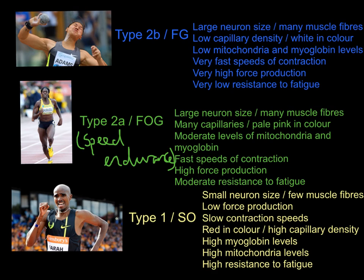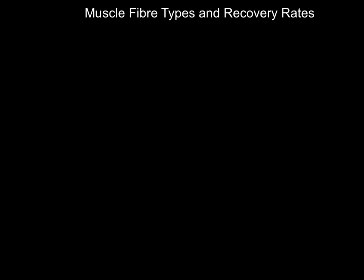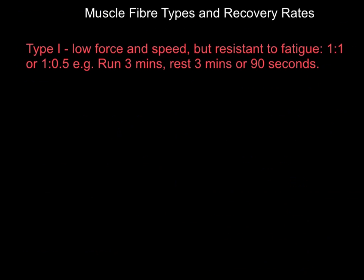The final topic is work-to-rest ratios and recovery rates. For Type 1 slow twitch muscle fibers — which produce low force and speed but are very resistant to fatigue — the work-to-rest ratio can be 1:1 or even 1:0.5. For example, a 1:1 ratio means running for three minutes then resting three minutes. With a 1:0.5 ratio, you run for three minutes but only give yourself 90 seconds to recover.